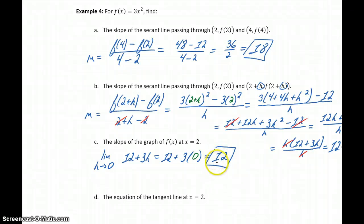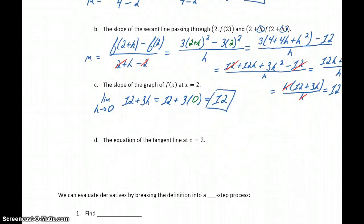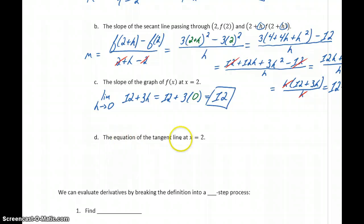So again, this is the slope of the tangent line. So now what we want to do is find the equation of our tangent line at x equals 2. So the tangent line is a straight line, a linear function. So it's going to be something of the form y equals mx + b.